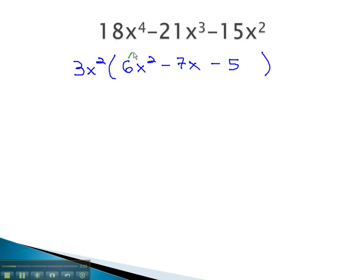We will use the AC method, multiplying 6 times negative 5 to get negative 30, and adding to the middle number, negative 7. With a little practice, we see the pair of numbers we need are 10 and 3, if the 10 is negative.